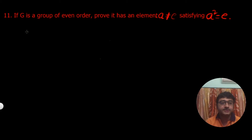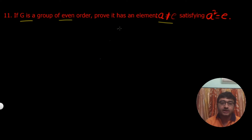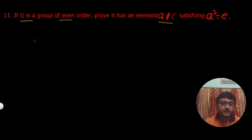I hope you understood that. Now let's solve problem number 11. In this problem it is given that G is a group of even order, and we need to prove that it has an element A, not equal to E (the identity), such that A squared equals E. We will solve this using the method of contradiction.